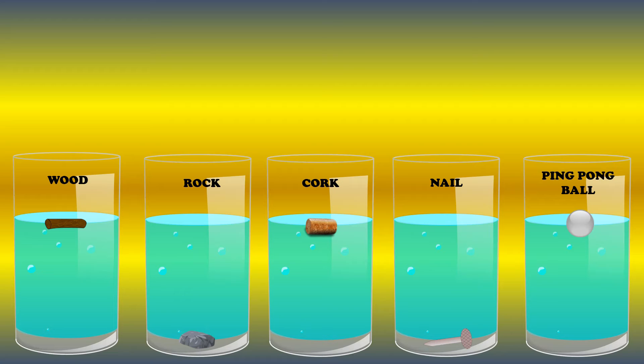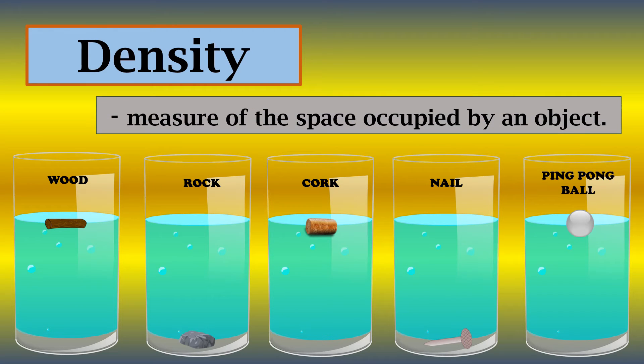If we talk about density, it measures the space occupied by an object. Density describes how closely packed the particles are in a solid, liquid, or gas. Remember, density is the amount of mass per unit volume. Solid materials are much denser compared to liquids, and liquids are much denser than gases. This has something to do with how the arrangement of their molecules is.